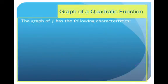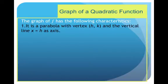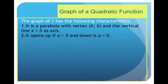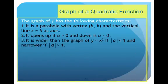So let's talk a little bit about general graphs of quadratic functions. The graph of f has the following characteristics. It's a parabola with the vertex h, k, and an axis of symmetry of x equals h. It opens up if the leading coefficient is positive. It's going to be a frown if the leading coefficient is negative. It's wider if our leading coefficient is less than 1, and it's going to be narrower if our leading coefficient is greater than 1.